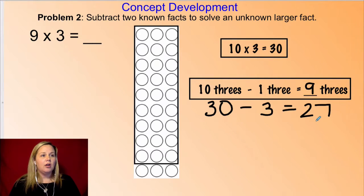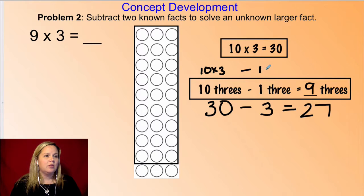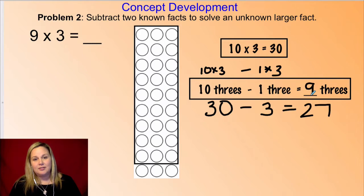So notice friends, all that we did with this problem is we basically took 10 x 3, and we subtracted 1 x 3. So that's how we got our one three. So really, it's the 10 minus the 1 gives us the 9.